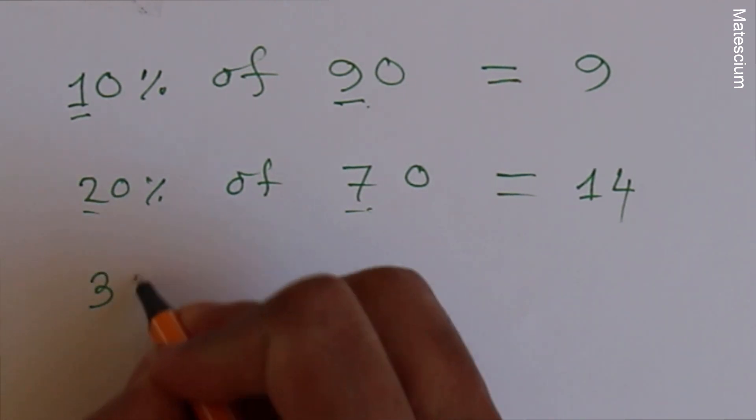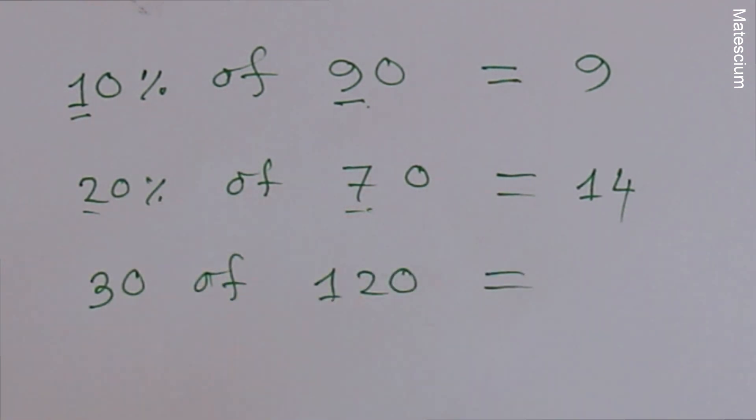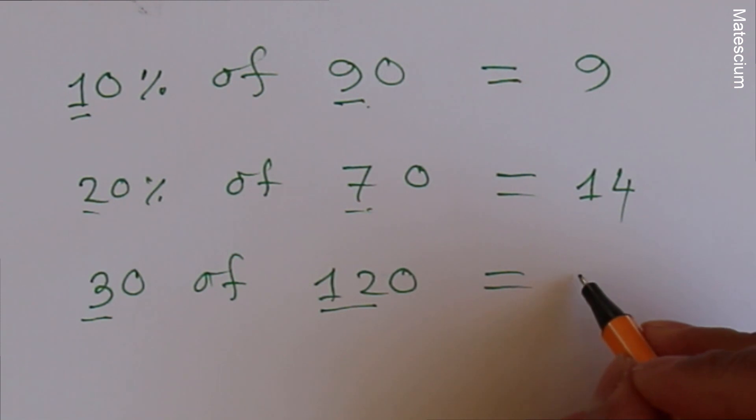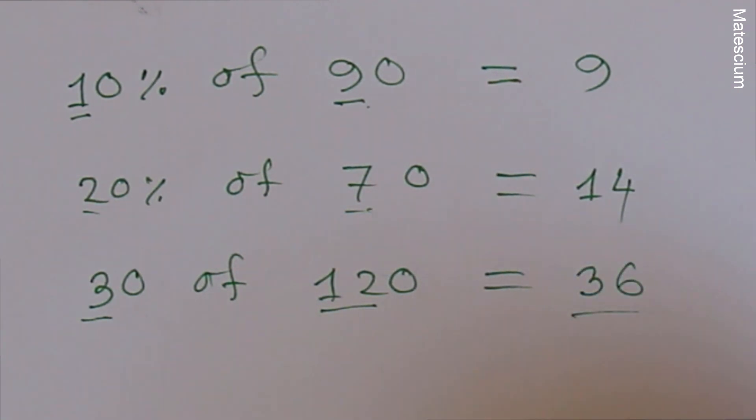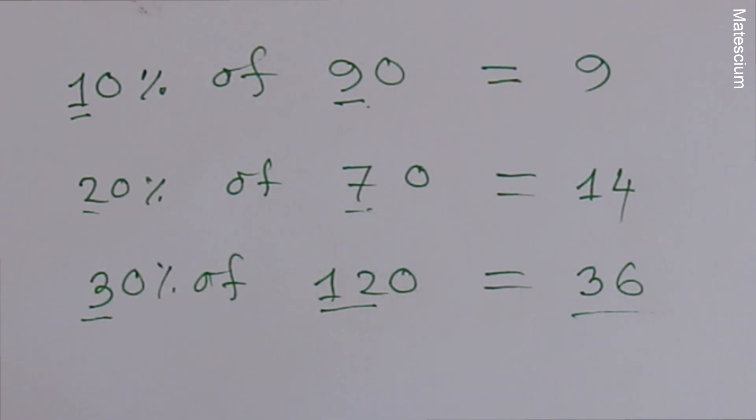30% of 120. That means three times 12 is 36. So 36 is the answer. It's very simple. Math is not so complex if you know the tricks. Believe me, let's practice something more.